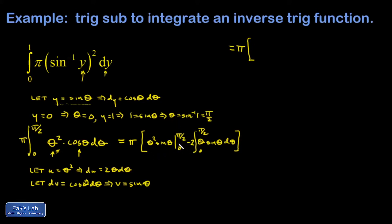Then I have to evaluate across the limits with theta squared sine theta. If I plug in the upper limit, that gives me pi squared over four multiplied by the sine of pi over two, which is one. So pi squared over four. The lower limit vanishes because theta is zero, so theta squared is zero and sine theta is also zero.